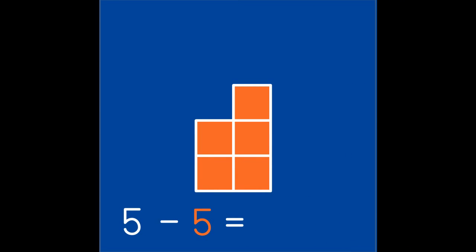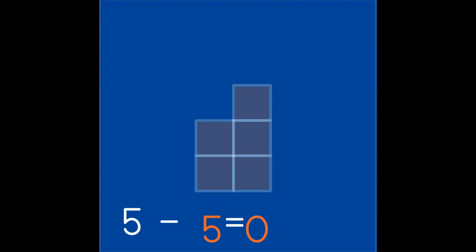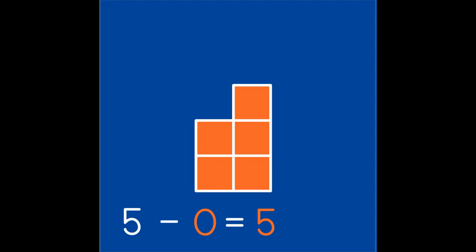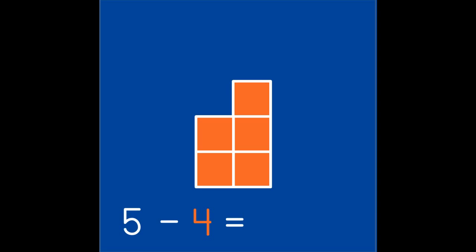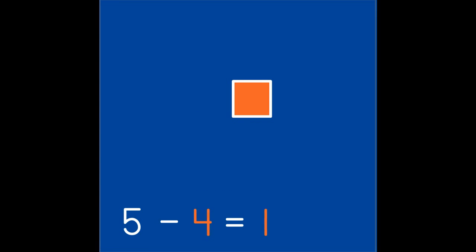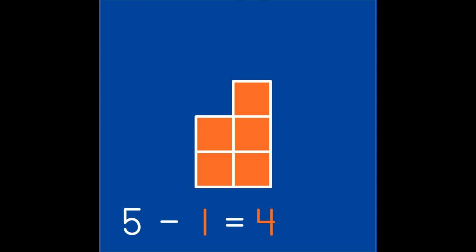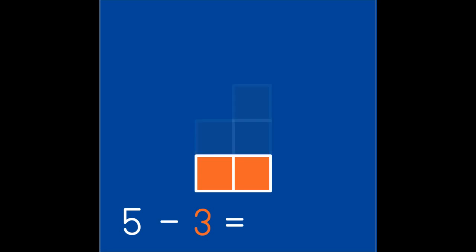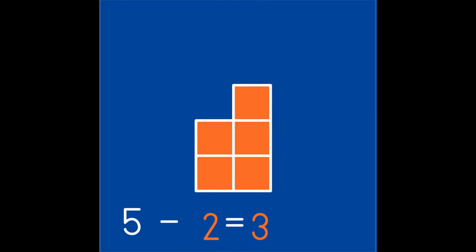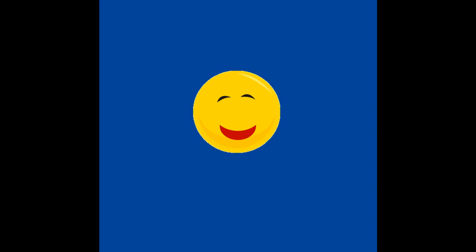Let's review separating the partners of five. Five take away five leaves the partner zero. And we can switch the partners — five take away zero leaves five. Five take away partner four leaves partner one. Switch the partners — five take away one leaves four. Five take away three leaves two, and five take away two leaves three. You know all the ways to combine the partners to make five, and you also know the ways to separate the partners from five. Congratulations!